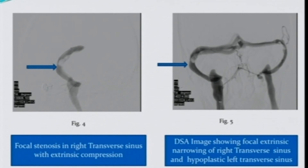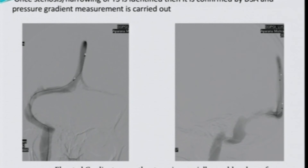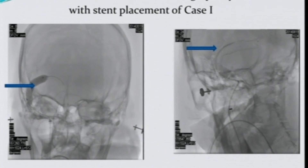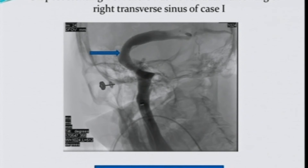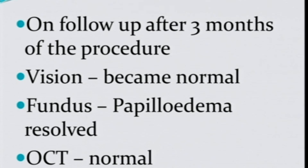The next step was to determine whether this stenosis was a cause or effect of IIH. If it were an effect, the narrowing should disappear on repeat MRV after lumbar puncture, but this was a persistent rigid tight stenosis. We then measured the pressure gradient proximal and distal to the stenosis using a microcatheter — a gradient of more than 4 mmHg indicates significant narrowing. In our patient the gradient was more than 10 mmHg, so we asked the neurologist to perform angioplasty of the sinus. A stent was placed, stenosis was relieved, venous drainage resumed, and the patient became asymptomatic on follow-up.